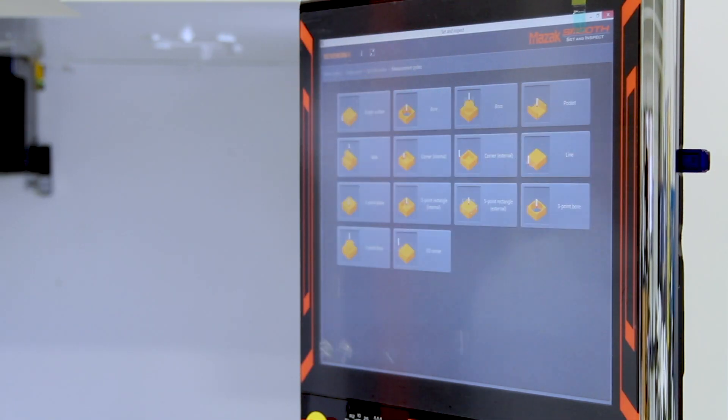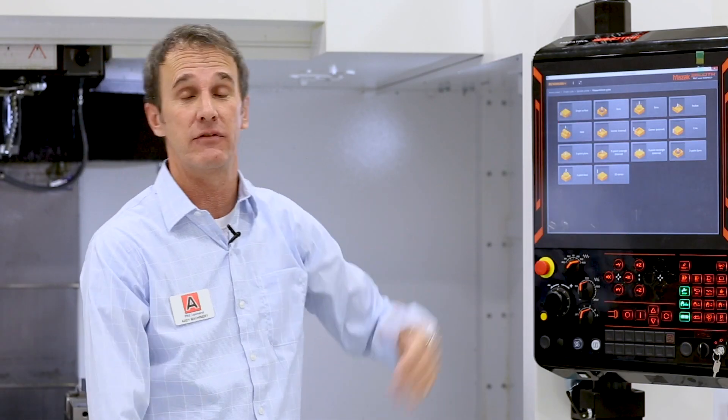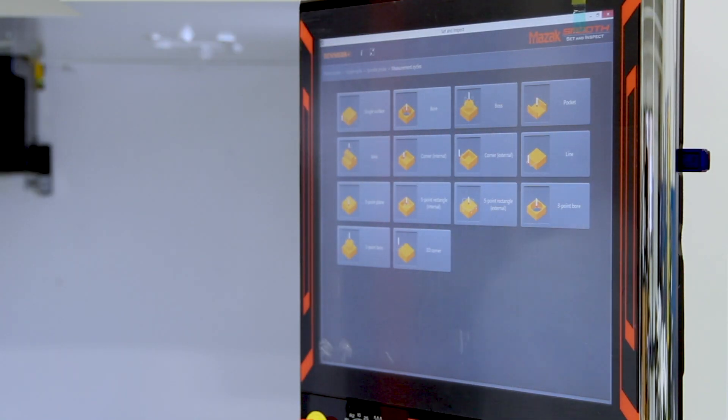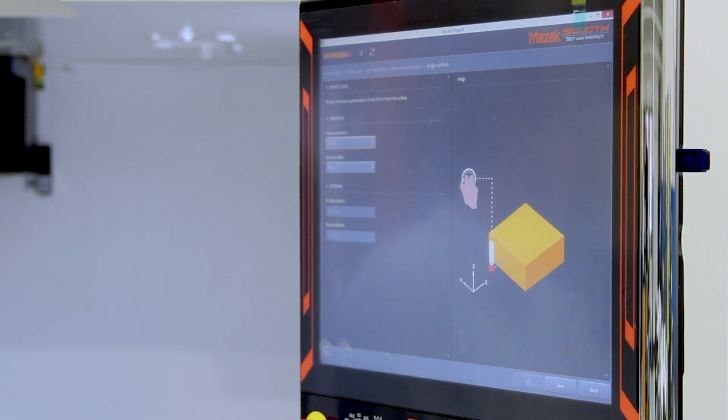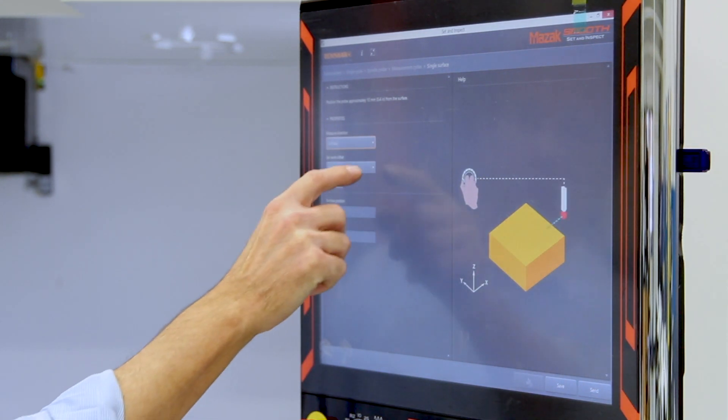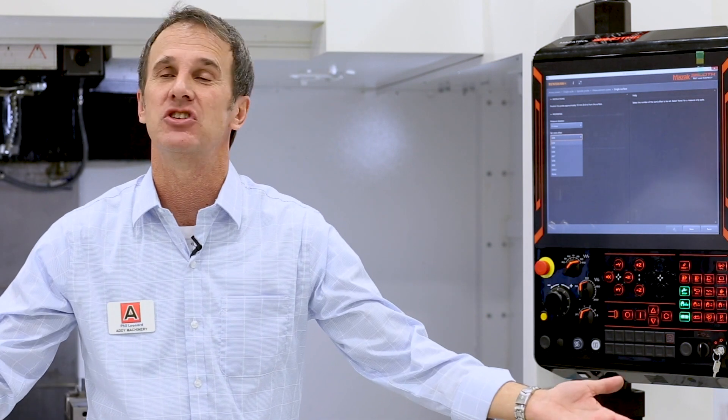So I can go to my measurement cycle screen, and it'll give you, depending on your machine and the options, a variety of different routines we can run. Now it's as simple with this interface as I can pick an option, what I like to do, and answer one, two, three questions. What I want to do, do I want to store it as a work offset, or am I using it just for inspection? It's as simple as hitting send, cycle start, the machine does all the work.